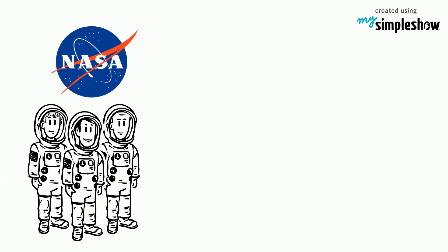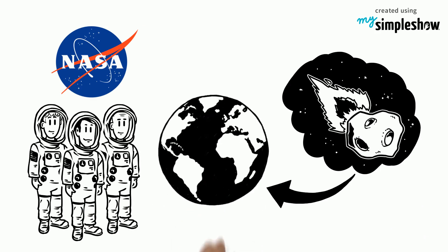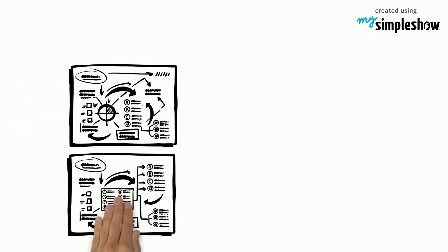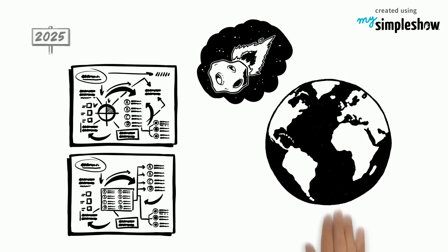NASA plans to base astronauts on an asteroid. However, it will be easier if the asteroid is closer to Earth. So they have an ambitious plan to move a small asteroid to a new orbit near to Earth by the year 2025.